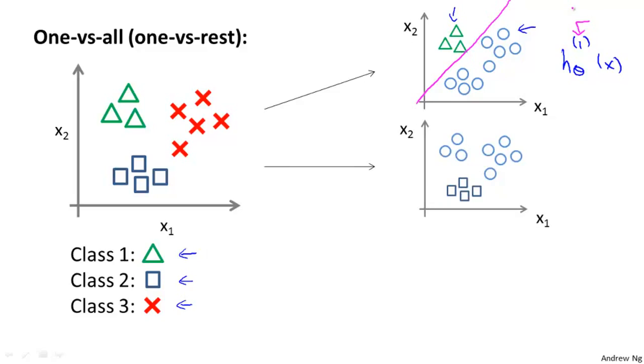Next we do the same thing for class 2. We're going to take the squares, and assign the squares as the positive class, and assign everything else, the triangles and the crosses, as a negative class. And then we fit a second logistic regression classifier, and we call this h of x superscript 2, where the superscript 2 denotes that we're now doing this, treating the square class as the positive class, and maybe we get a classifier like that.